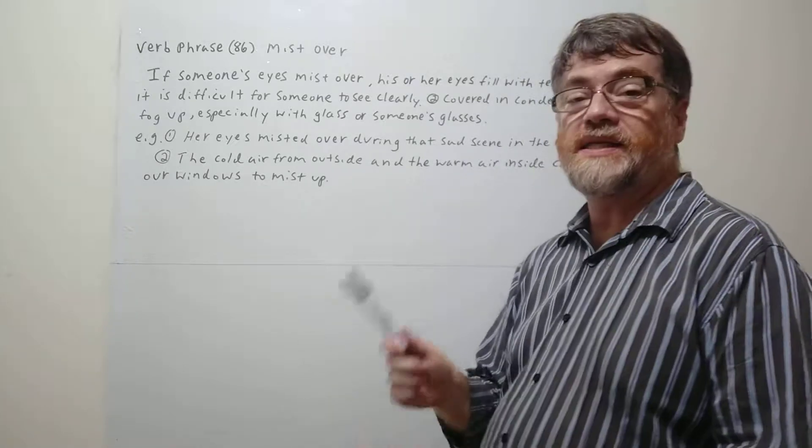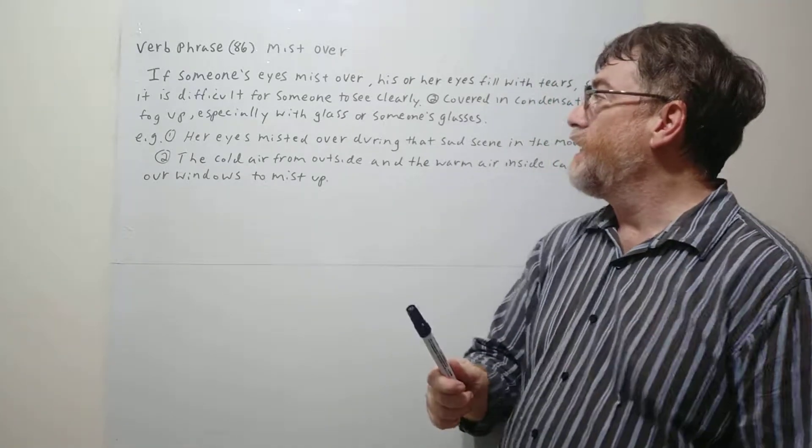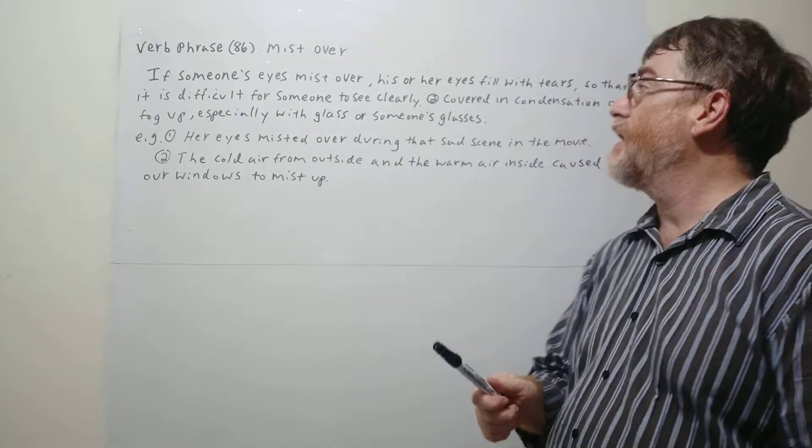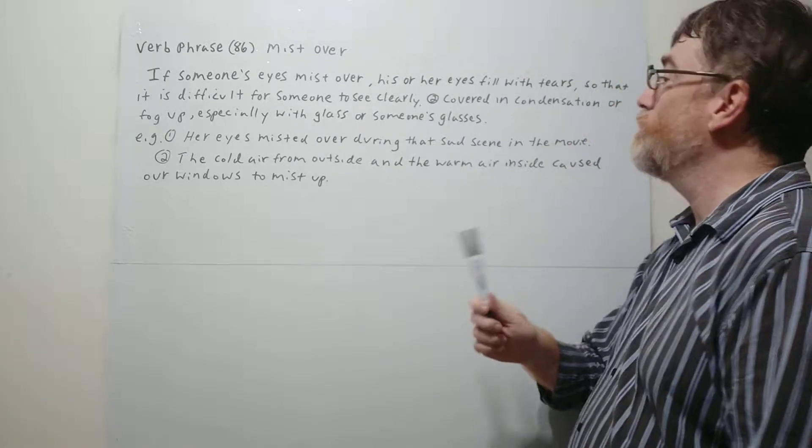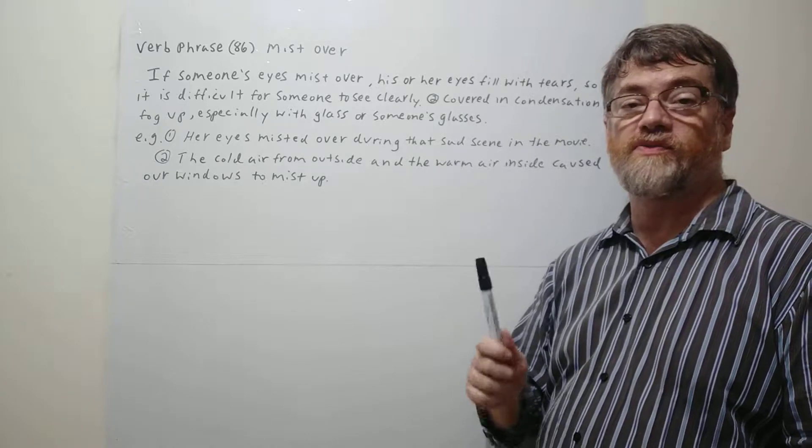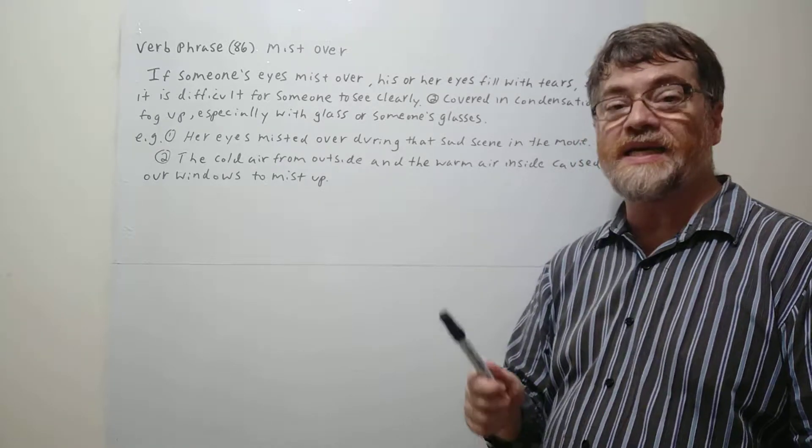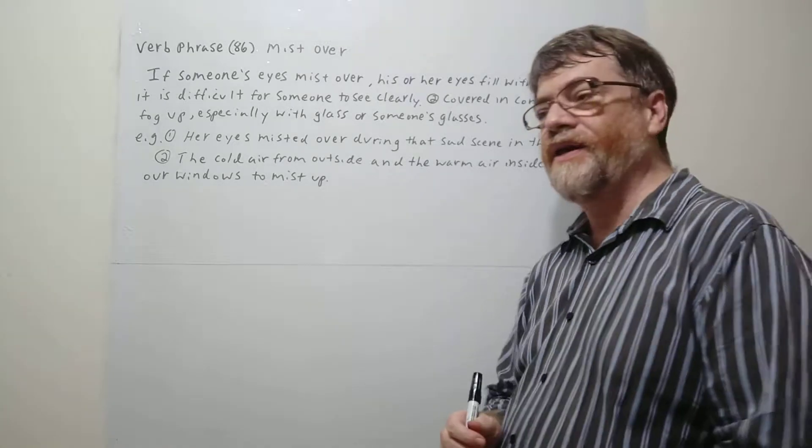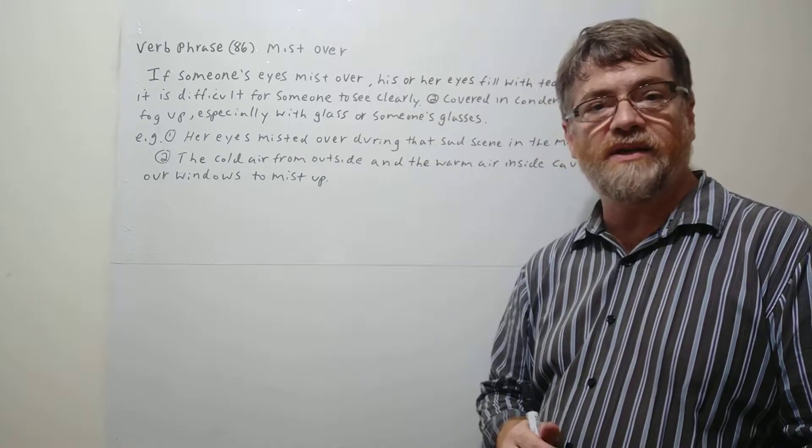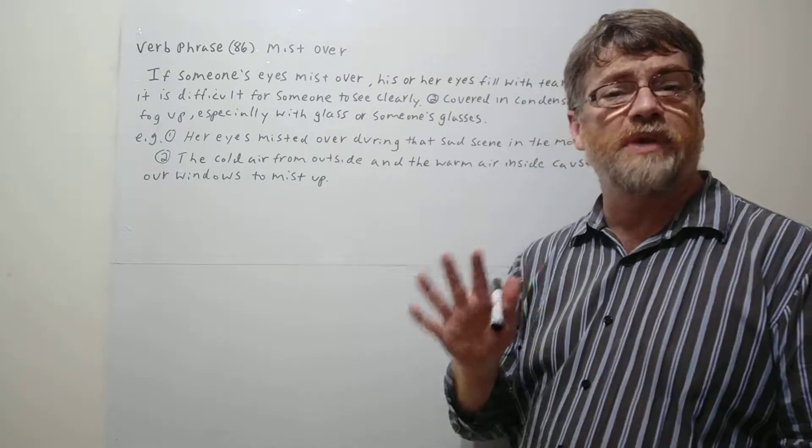If someone's eyes mist over, his or her eyes fill with tears so that it is difficult for someone to see clearly. So yeah, you got enough tears in your eyes that it's a little blurry maybe.